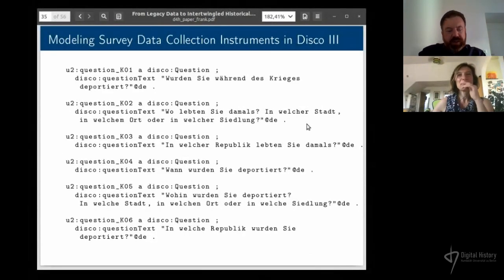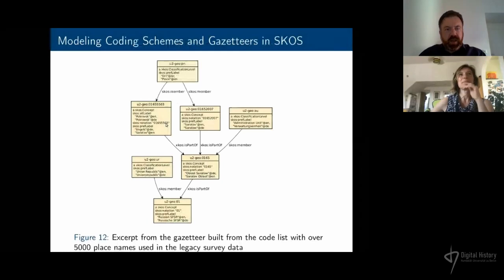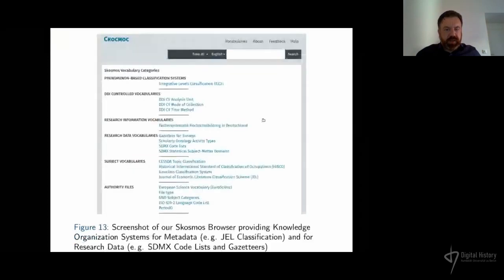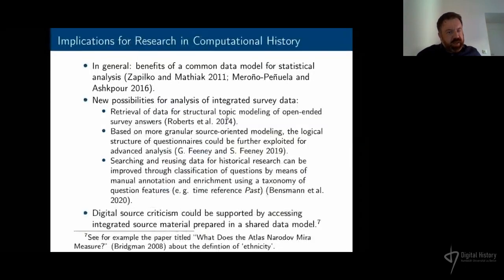Here is a small example for a gazetteer. SKOS is not enough — it is too simple a knowledge organization system. We extended it with SKOS-XL to be able to model classification levels typical for classification systems used in statistical data. Here is our COSMOS browser showing SKOS for surveys, SDMX code lists, and DDI controlled vocabularies for methodological information.